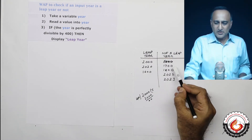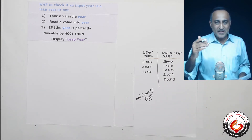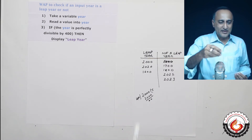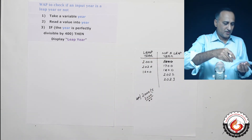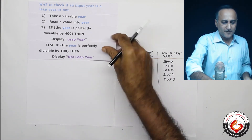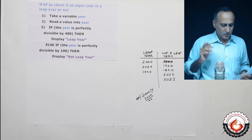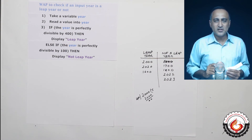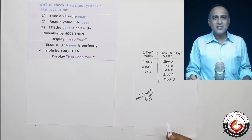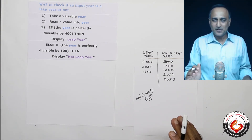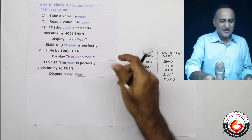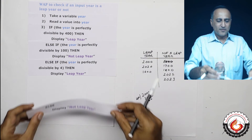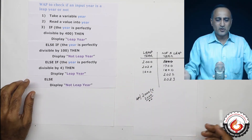Next I handle century years like 1700, 1800, and 1900. For any century year where dividing by 100 gives a remainder of 0, that year is not a leap year. Now we have taken care of all century years. For non-century years the logic is clear: if the given year divided by 4 has a remainder of 0, it is a leap year; otherwise it is not a leap year.